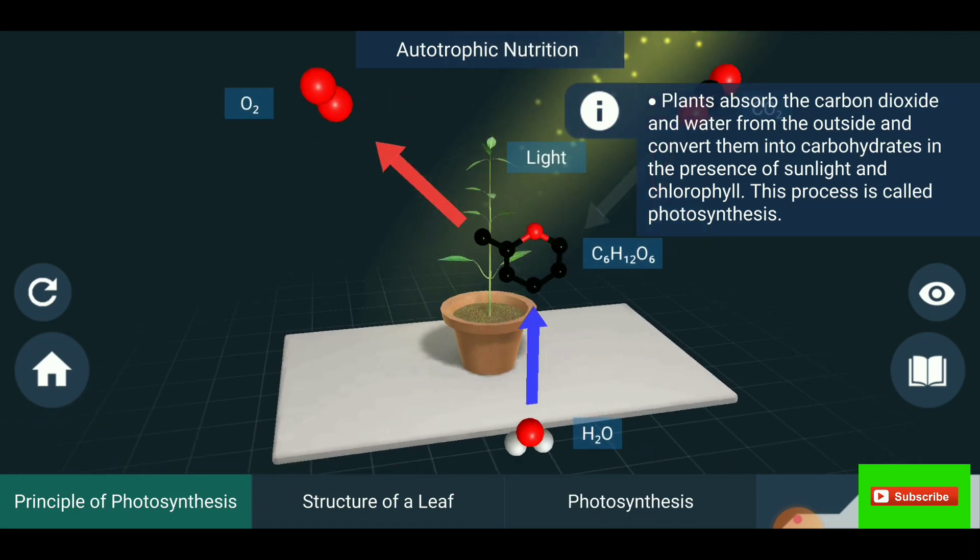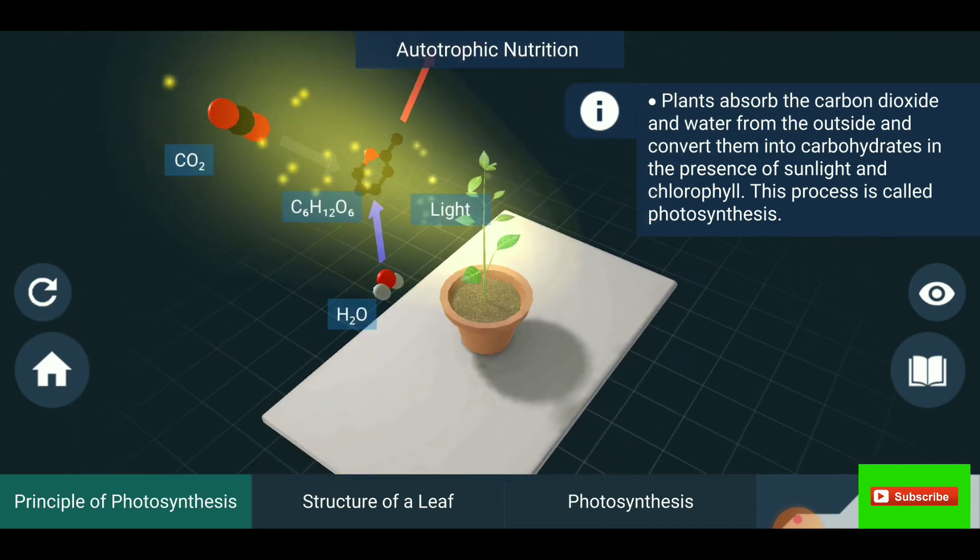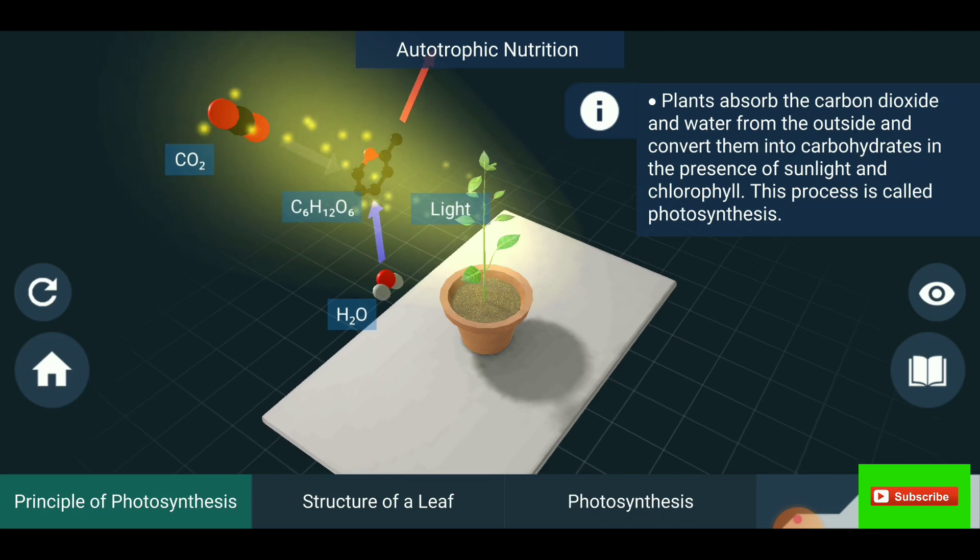You are seeing the process in which the sunlight is coming. With the help of sunlight, the plant is producing C6H12O6 food and water with the help of carbon dioxide. This is also called autotrophic nutrition.